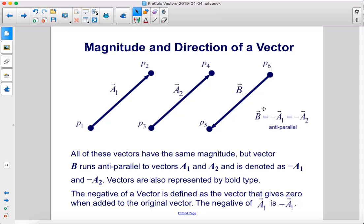All of these vectors have the same magnitude, but vector B runs anti-parallel to vectors A1 and A2, and is denoted as negative A1 and negative A2. Vectors are also represented by bold type. The negative of a vector is defined as the vector that gives zero when added to the original vector.